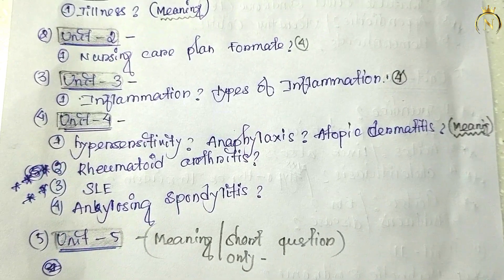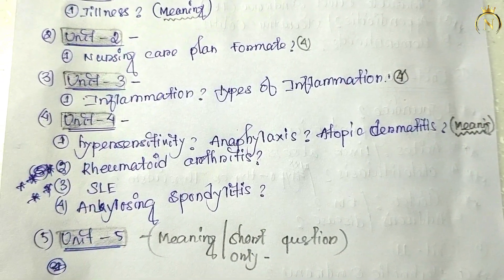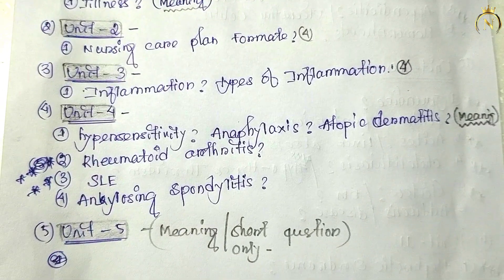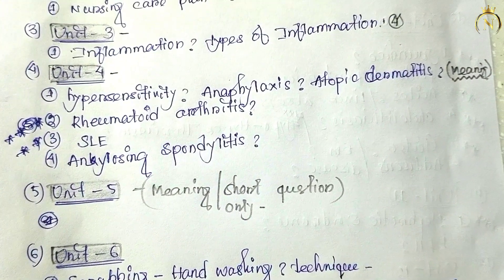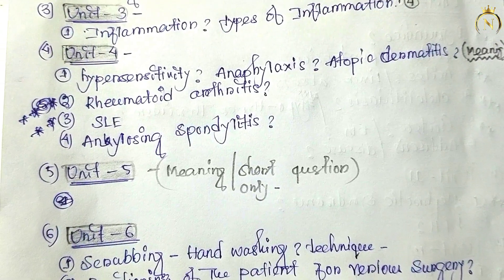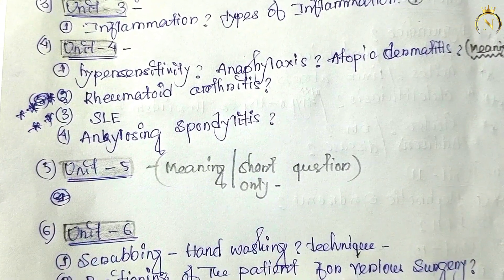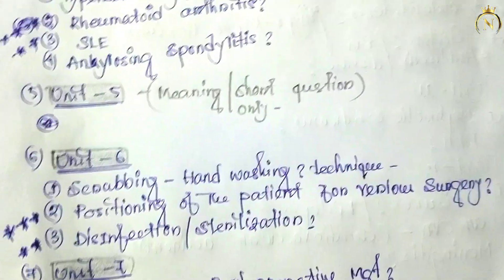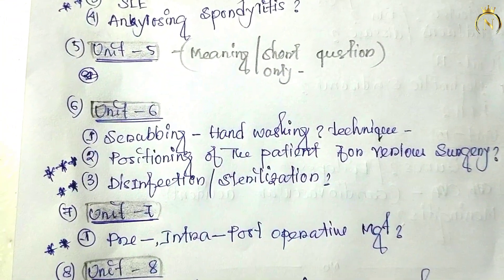Unit four is also not that much important. Only hypersensitivity and anaphylaxis meaning will sometimes come. Atopic dermatitis meaning will also sometimes come. In that unit, rheumatoid arthritis, ankylosing spondylitis — these three will have one formal question. Note: rheumatoid arthritis, ankylosing spondylitis — one question will come from these three.